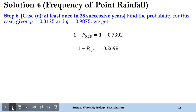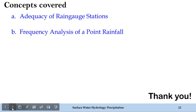I hope you were able to analyze both concepts — adequacy of rain gauge stations and frequency analysis of point rainfall — and the different conditions covered in these problems. Thank you for being here. Stay connected for more problem-solving sessions for the course Surface Water Hydrology. Thank you.